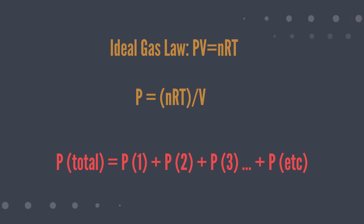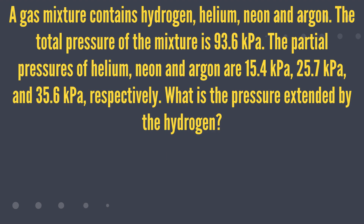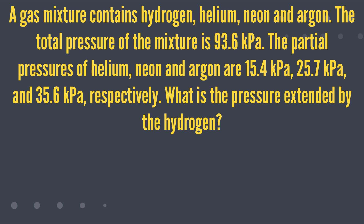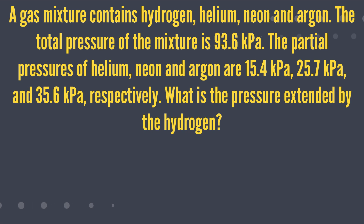Let's do a sample question. A gas mixture contains hydrogen, helium, neon, and argon. The total pressure of the mixture is 93.6 kilopascals. The partial pressures of helium, neon, and argon are 15.4 kilopascals, 24.7 kPa, and 35.6 kPa respectively.